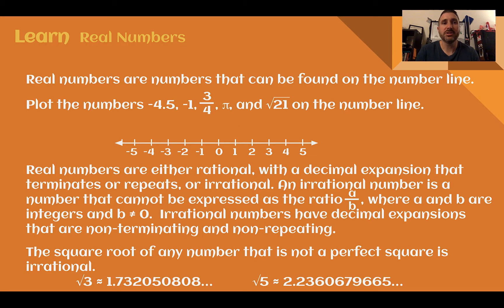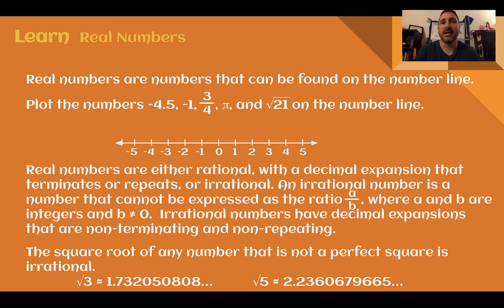Real numbers are numbers that can be found on the number line. If you're thinking how I would be thinking — aren't all numbers real? Well, in future math classes, you will learn what are called imaginary numbers. But here we're going to focus on real numbers, which are the numbers that can be found on the number line. So we have some numbers here: negative 4.5, negative 1, 3 fourths, pi, and the square root of 21.